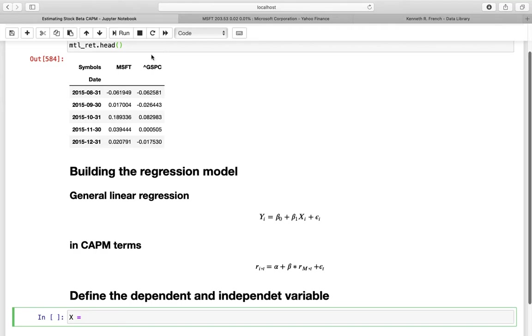So in our data frame monthly returns, that is the S&P 500 returns. So we just have to define the data frame monthly returns and access this column here, GSPC. And that's it. That's our independent variable.